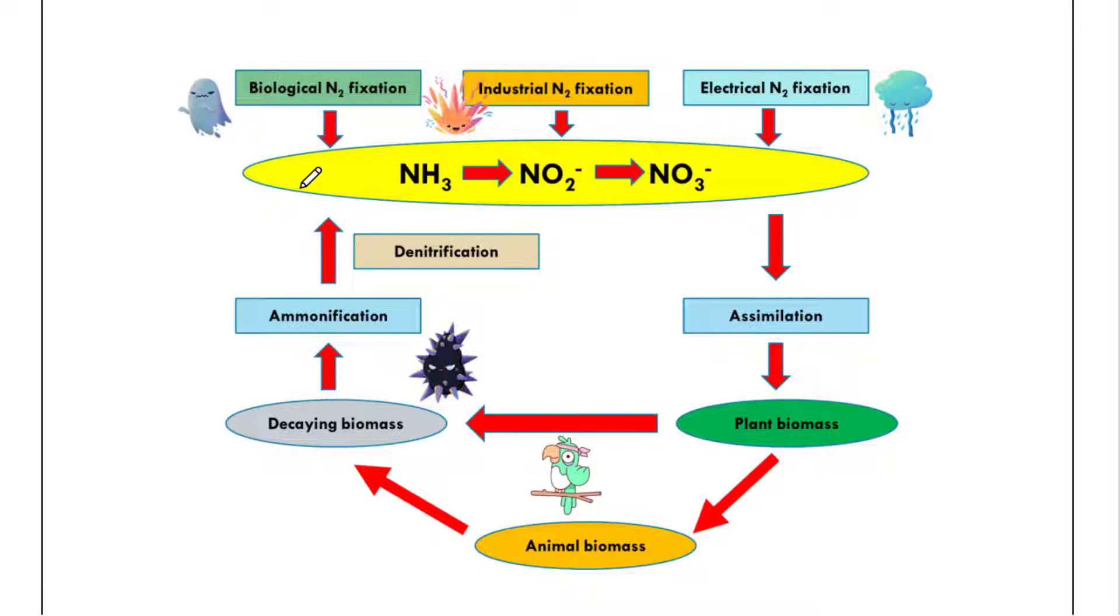Here we have the schematic presentation. We can see that nitrogen fixation is occurring here in three ways, where nitrogen is converted into ammonia. Then we can see the nitrification process, where ammonia is oxidized into nitrate. This is the assimilation process, where plants absorb nitrate from the soil. Then this is the decaying process, the ammonification, and lastly the denitrification process. In this way the nitrogen cycle occurs in nature.